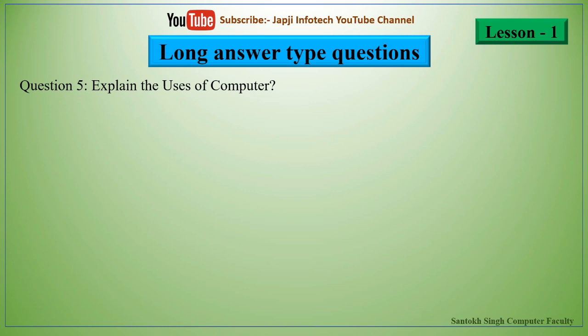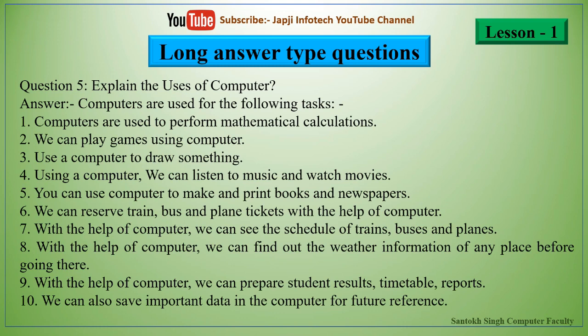The fifth question is: explain the uses of computer. Computers are used for the following tasks: performing mathematical calculations, playing games, drawing, listening to music and watching movies, making and printing books and newspapers, reserving train/bus/plane tickets, viewing schedules of trains/buses/planes, finding weather information, preparing student results/timetables/reports, and saving important data for future reference.